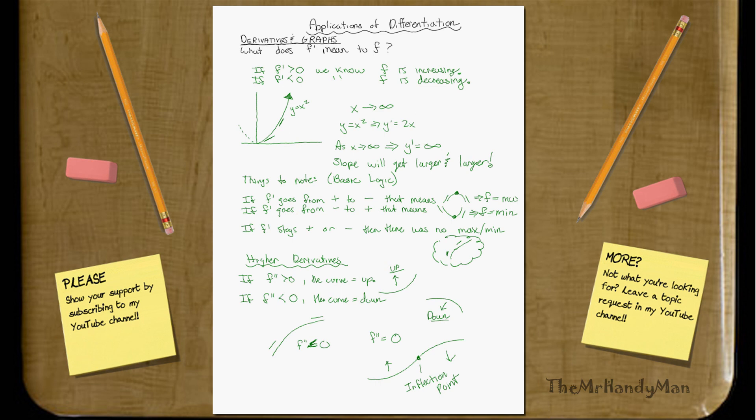And, one thing that you could use these double primes for, is that, essentially, if you have a point, where f prime equals zero, and, f double prime, equal, or is greater than zero, then you have a minimum. Whereas, f prime, if that equals zero, and, your f double prime is less than zero, then you have a max.